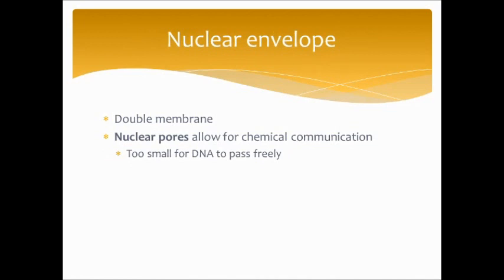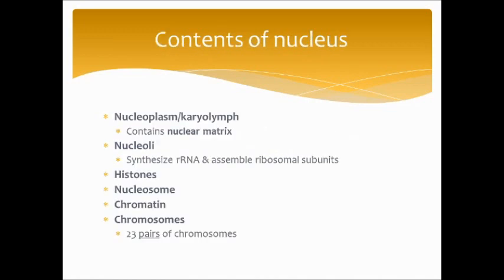The nuclear envelope is a double membrane with nuclear pores allowing chemical communication — too small for DNA to pass freely, but RNA can. The nucleus contains the nucleoplasm, or karyolymph, which is the liquid portion, and also a nuclear matrix, which is the structural framework. There are also dark-staining components known as nucleoli, responsible for synthesizing RNA and assembling ribosomal subunits — this is how ribosomes are made.